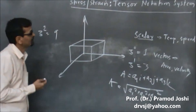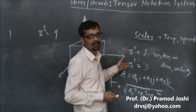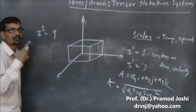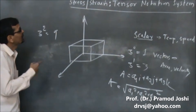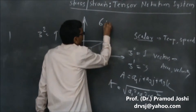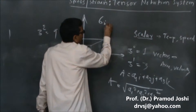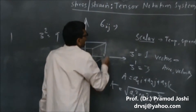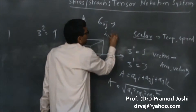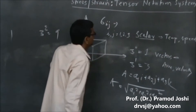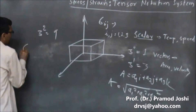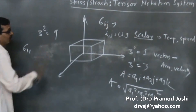In a tensor notation system, a vector can be represented by a single subscript, whereas stresses and strains, which are tensors of the second order, can be described by a double subscript system. For example, a stress sigma i-j, where i and j are the two subscripts and each varies from 1 to 3. So if we make the permutations, a total of 9 stresses can be represented.